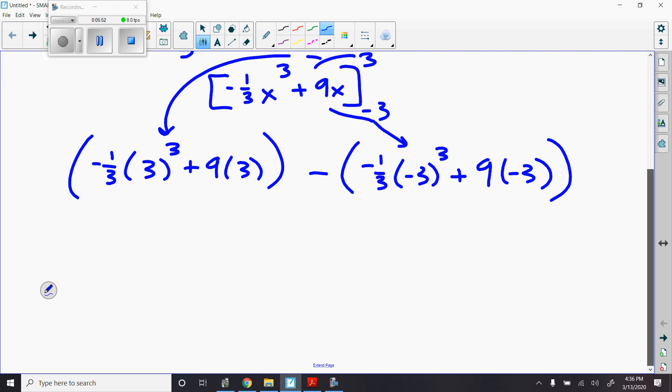Now I've got to figure this thing out by hand. When I'm doing this, 3 cubed is 27. 27 times negative 1 third is negative 9. So I'm going to get negative 9 plus 27. Over here, negative 3 cubed is negative 27. Negative 27 times negative 1 third is positive 9 minus 27. Negative 9 plus 27 is 18, and I get 18 minus negative 18, which we know is 18 plus 18, which is 36.